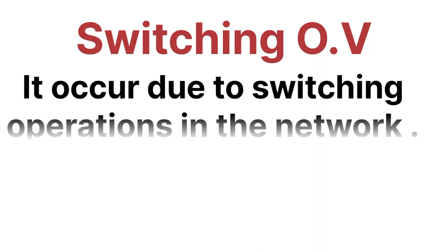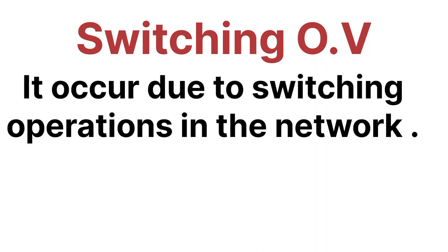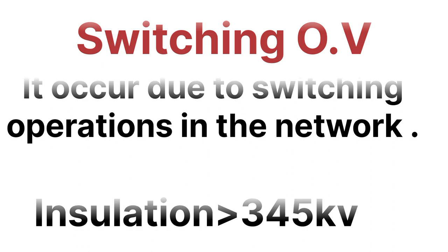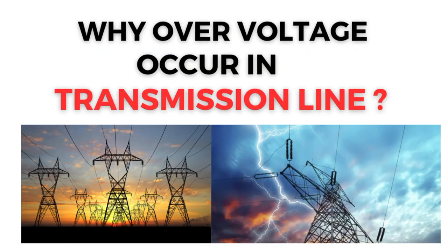Switching over voltage occurs due to any type of faulty condition in the circuit. If the over voltage is above 345 kV, then switching over voltage is considered. So that's all about the types of over voltages in the transmission line.